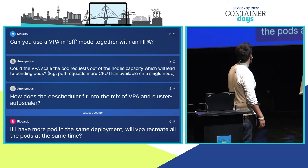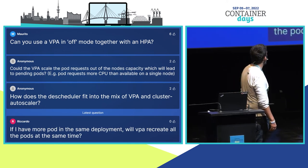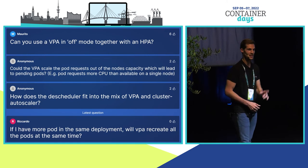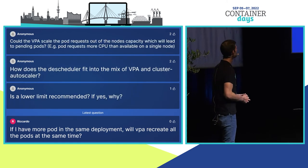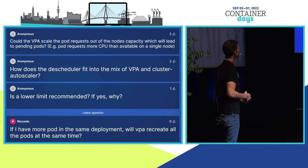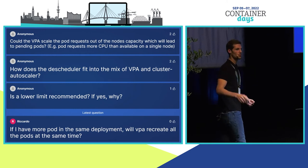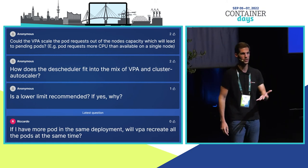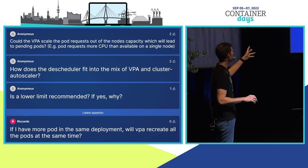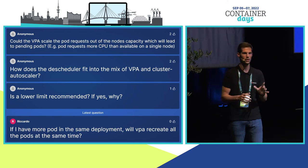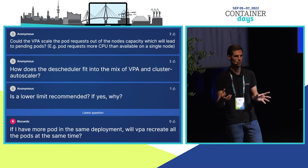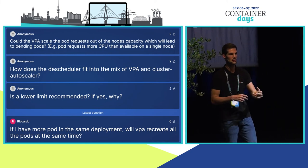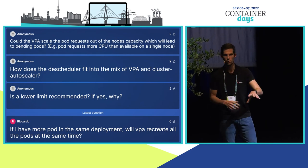Can you use VPA in off mode together with an HPA? Honestly, we need to check that — it's a great question for next time. Could VPA scale pod requests beyond the node's capacity, leading to pending pods? Yes, and that's exactly where combining VPA with the Cluster Autoscaler helps. As resources grow and pods need more, the Cluster Autoscaler will add more nodes, and then VPA can restart the pods to add the required memory and CPU.